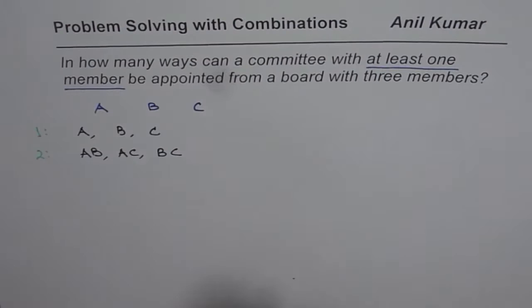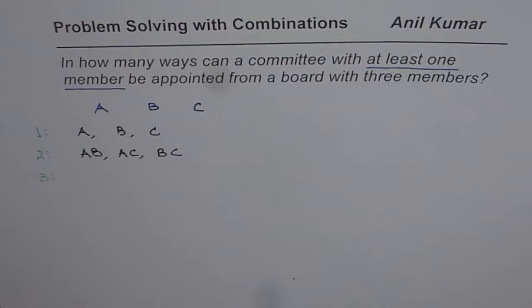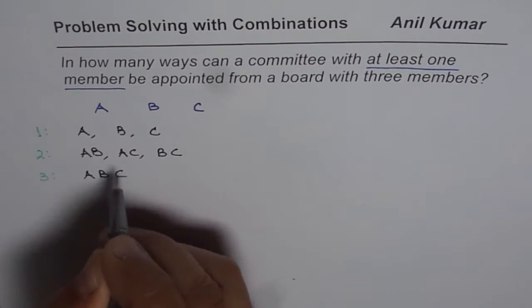Now the other option is case three for us is that there's a committee of three members that means A, B and C, all three.